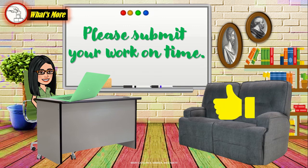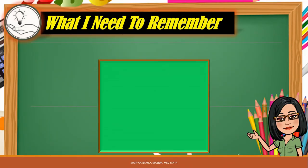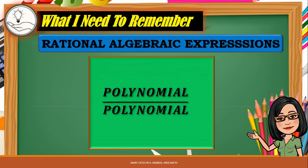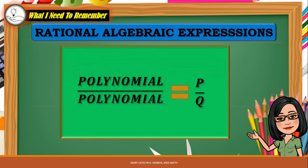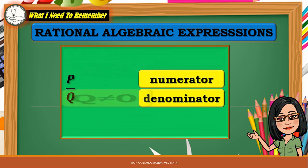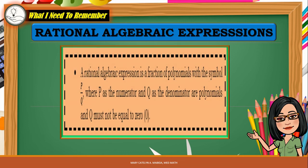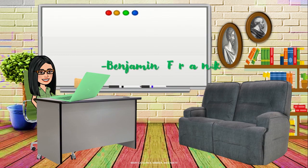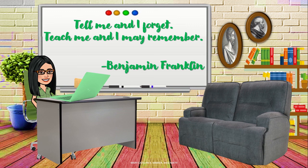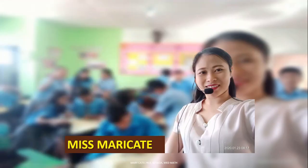A rational algebraic expression is a fraction of polynomials with the symbol P over Q, where P as the numerator and Q as the denominator are polynomials, and Q must not be equal to 0. Thank you very much for watching and listening. If I tell you, you can forget it. If I teach you, you may remember it. But if you get involved, then you will learn. This has been your teacher, Ms. Mary-Kate. Get involved and keep on learning.